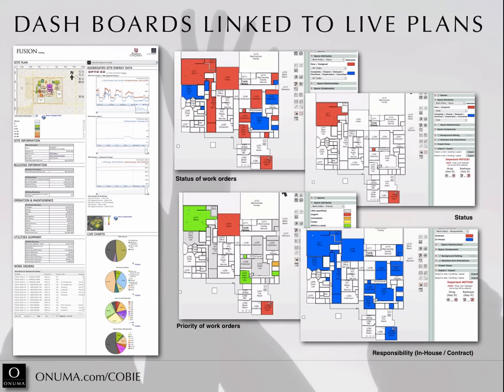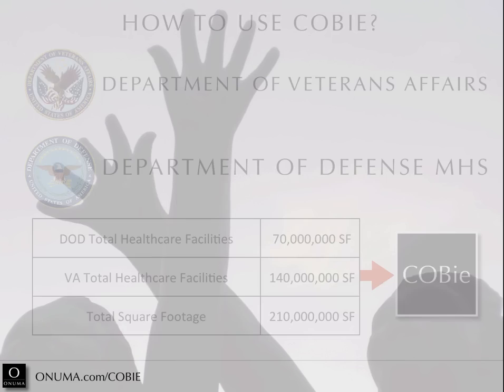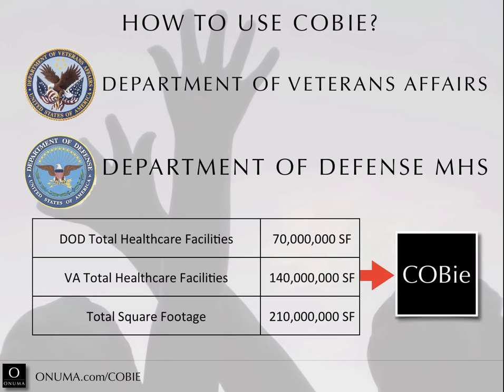A dashboard pops up for the administrator showing real-time energy use, a color code of what's going on across campus, color codes of spaces with outstanding work orders, or schedules coming up for the next week of classrooms. Once you layer this information together you get total asset visibility and you can make decisions on the fly. That's already common practice on the internet — it just isn't in the BIM and facility world yet — and connecting the dots like this allows you to change the way you deal with facilities.